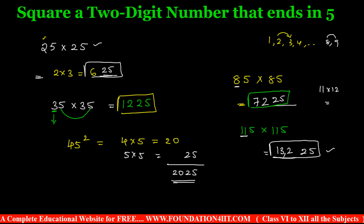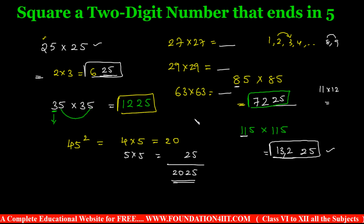What if the number does not end in 5? For example 27 × 27, 29 × 29, or 63 × 63 — how do we handle those? I will explain those modifications in chapters 3 and 4, showing how to solve them instantly without pen and paper.